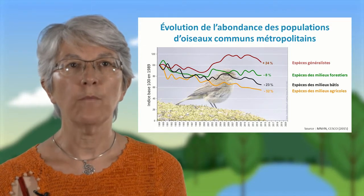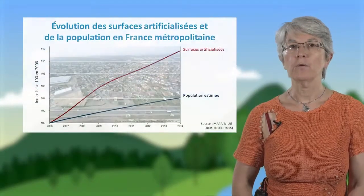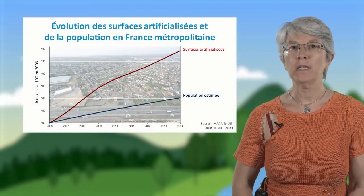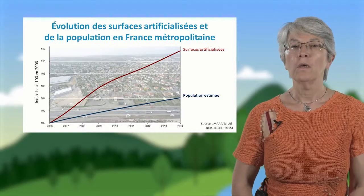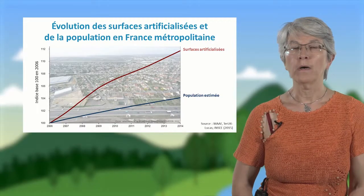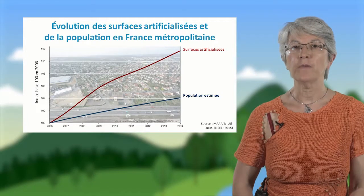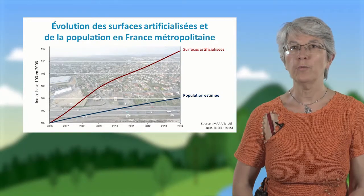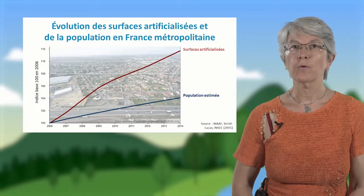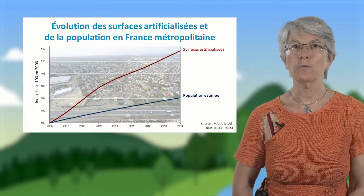Ce déclin est dû notamment à la perte d'habitat et à la fragmentation des milieux. Sur l'évolution des surfaces artificialisées en France, la courbe de la population en bas et la courbe des surfaces artificialisées en haut s'écartent depuis 2006. Cela montre que tout nouvel habitant en 2014 consomme plus d'espace qu'il n'en consommait en 2006.